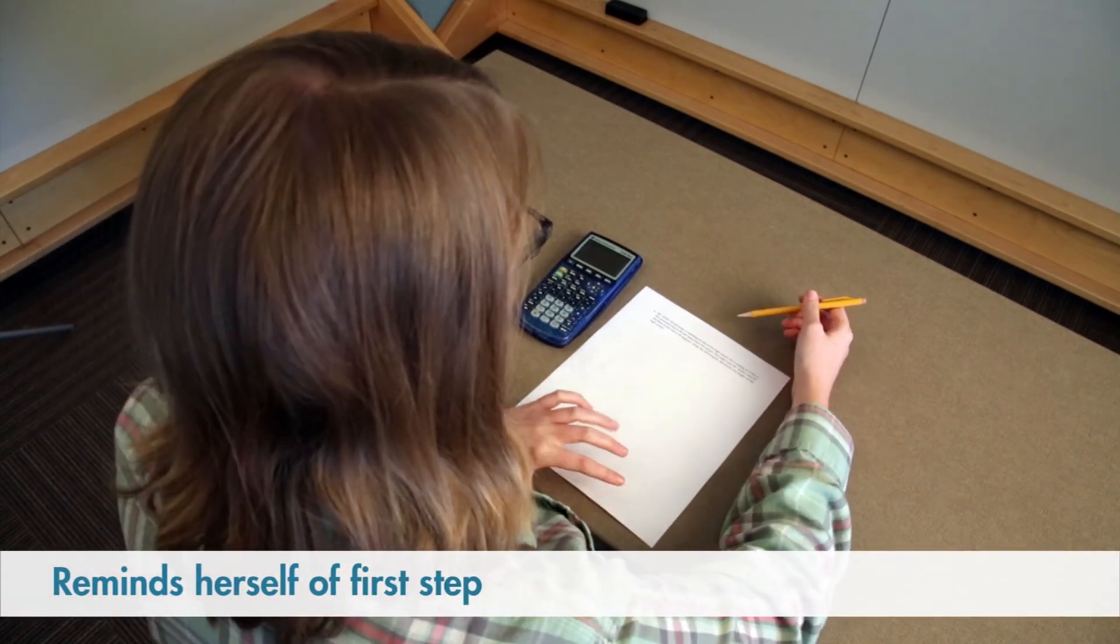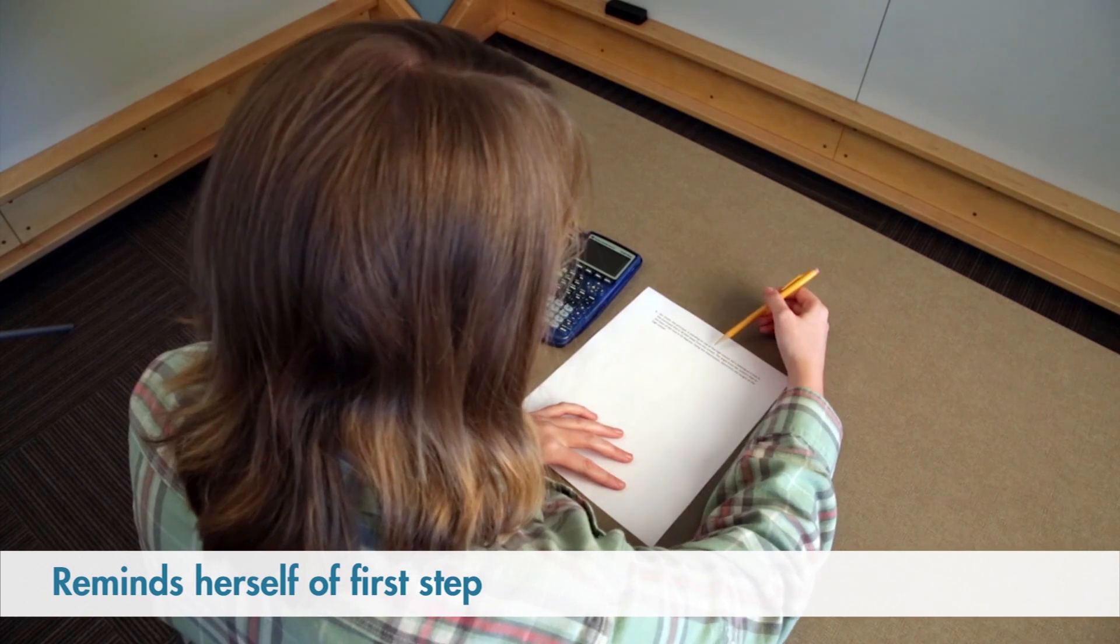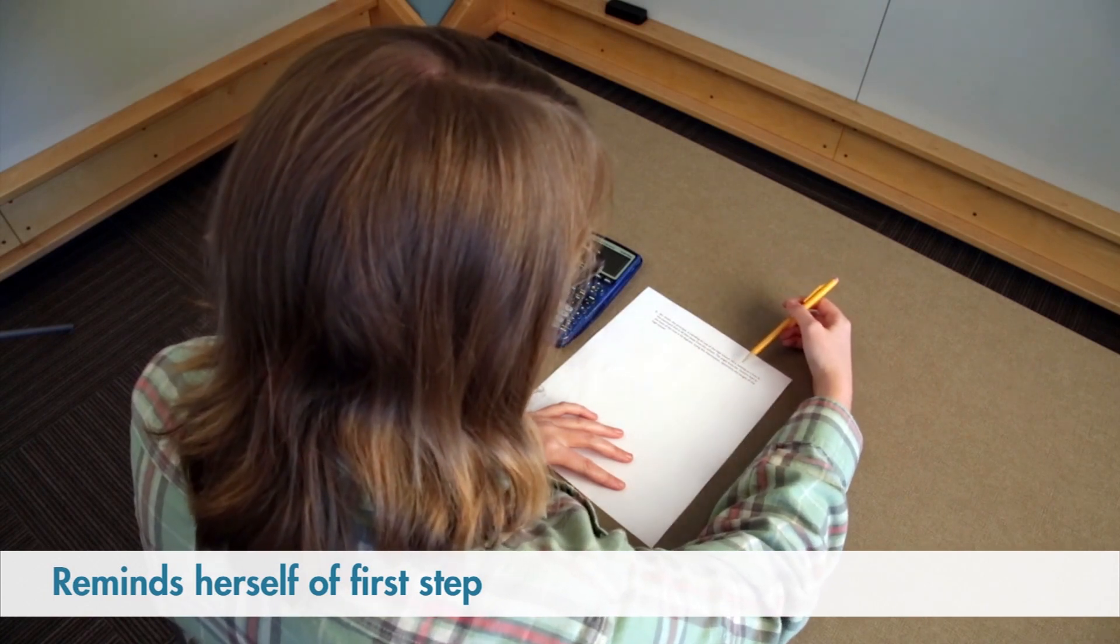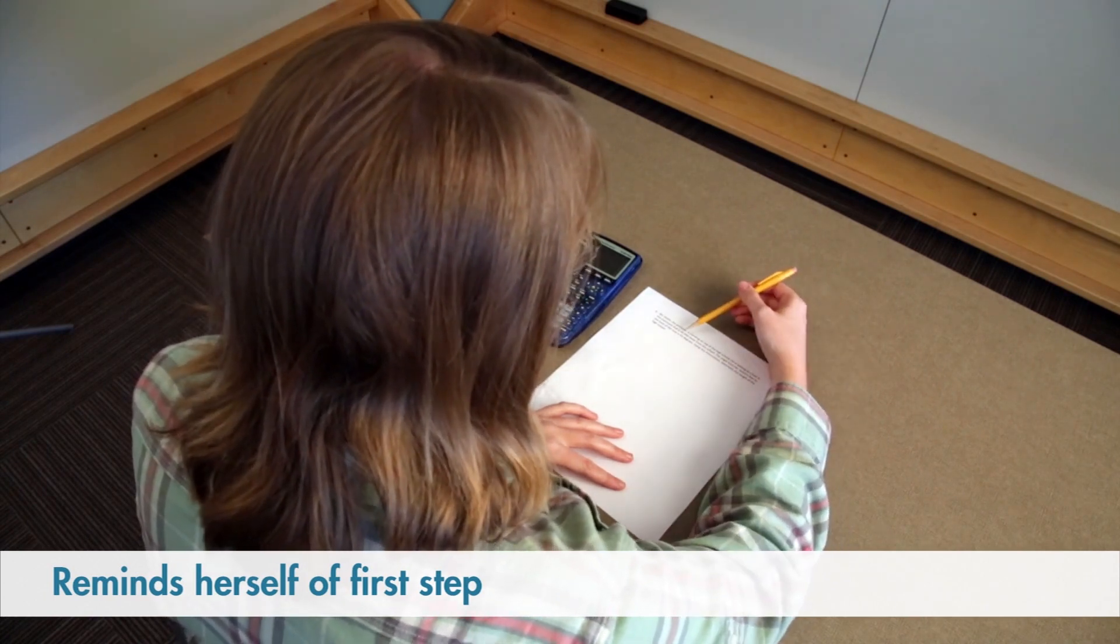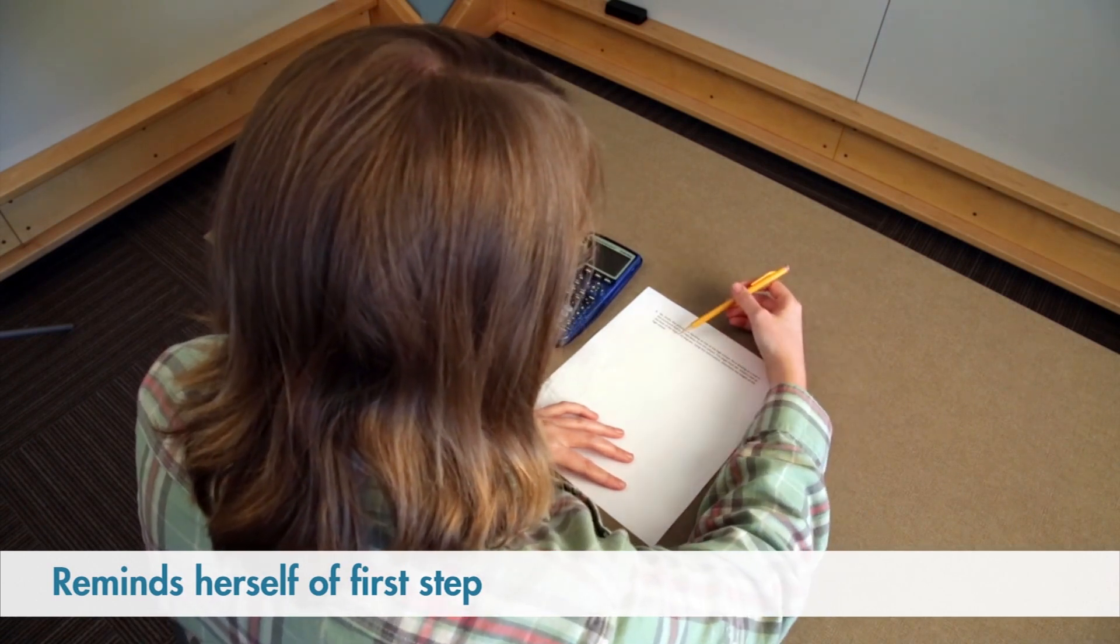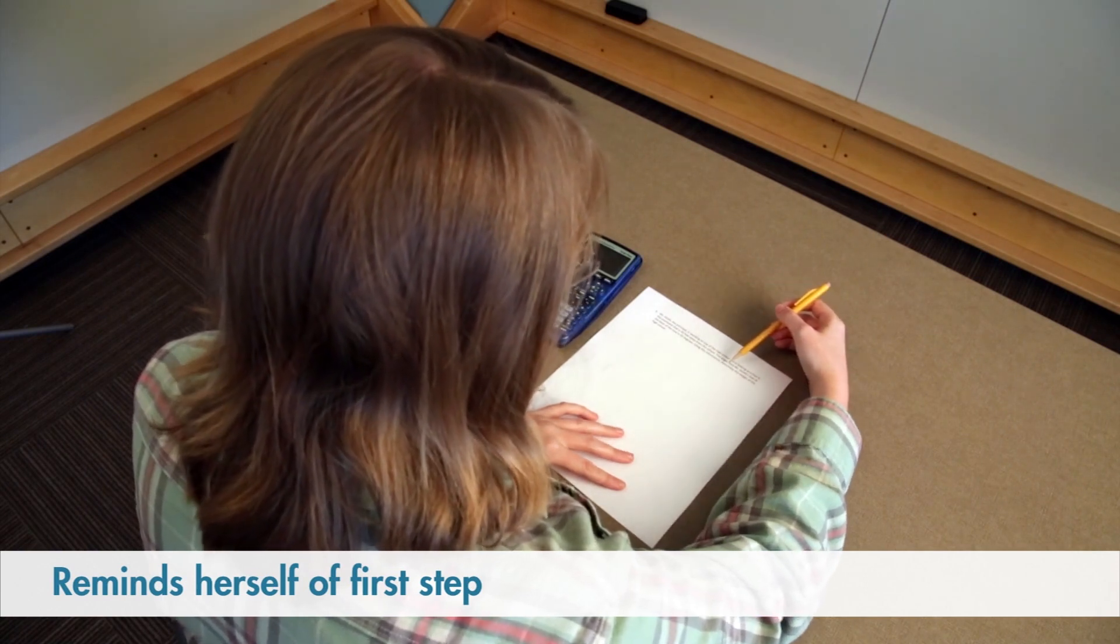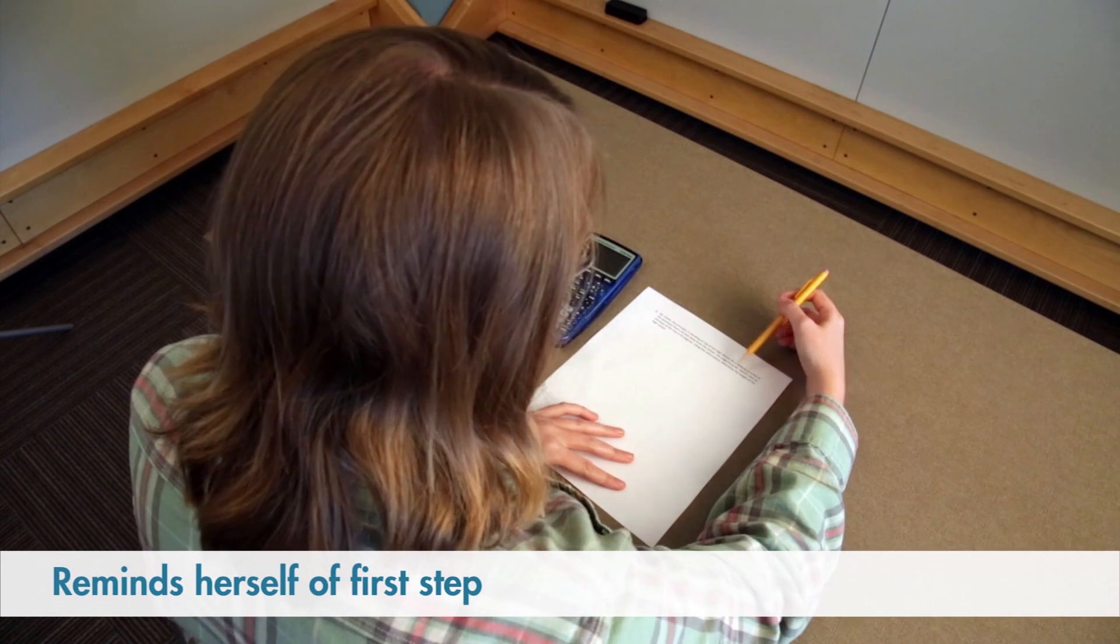First, I'm going to read the problem. Mr. Smith, the principal, is standing on top of the high school. He is looking at a tree in the courtyard that is 30 feet away from the school. The angle from Mr. Smith's feet to the base of the tree is 43 degrees. Using this information, determine the height of the high school.